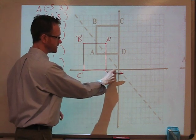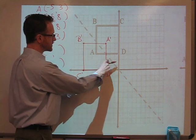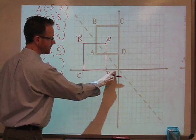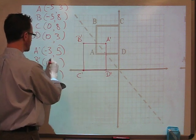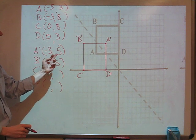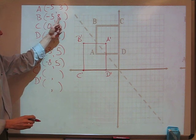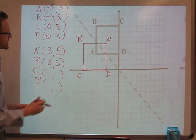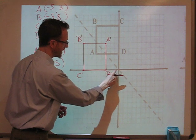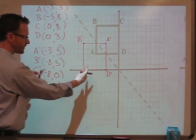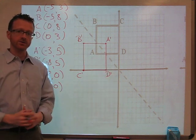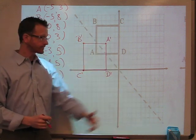Let's look at the coordinates to see if we can derive a pattern. A prime is at negative three, five. The original A was at negative five, three — those switched and the signs changed, becoming negative three, five. B prime is at negative eight, five. The original B was at negative five, eight — same thing: x and y switched and signs changed. Testing the theory: C was at zero, eight, so it should become negative eight, zero — and sure enough that's where new C is. And D was at zero, three, so it becomes negative three, zero. So the rule for reflecting over a negative slope diagonal y equals negative x is: the x and y coordinates switch and both signs change.